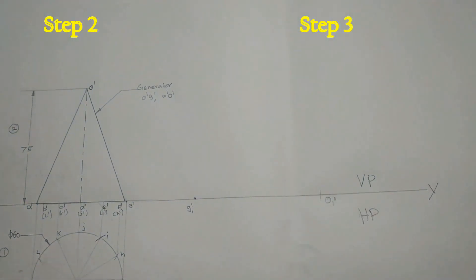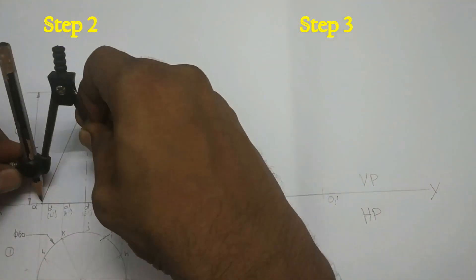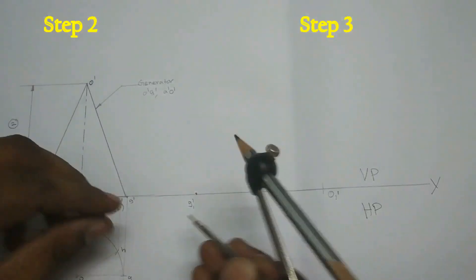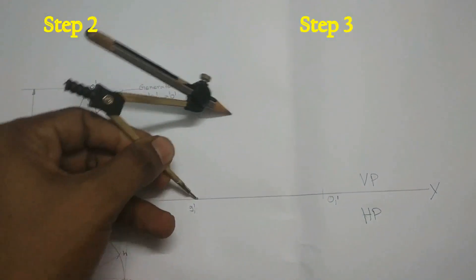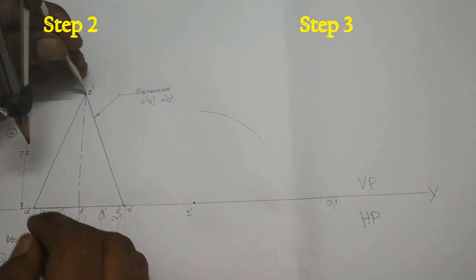Mark the distance in step 3. Now measure the distance G dash, A dash in step 2. And make an arc in step 3.